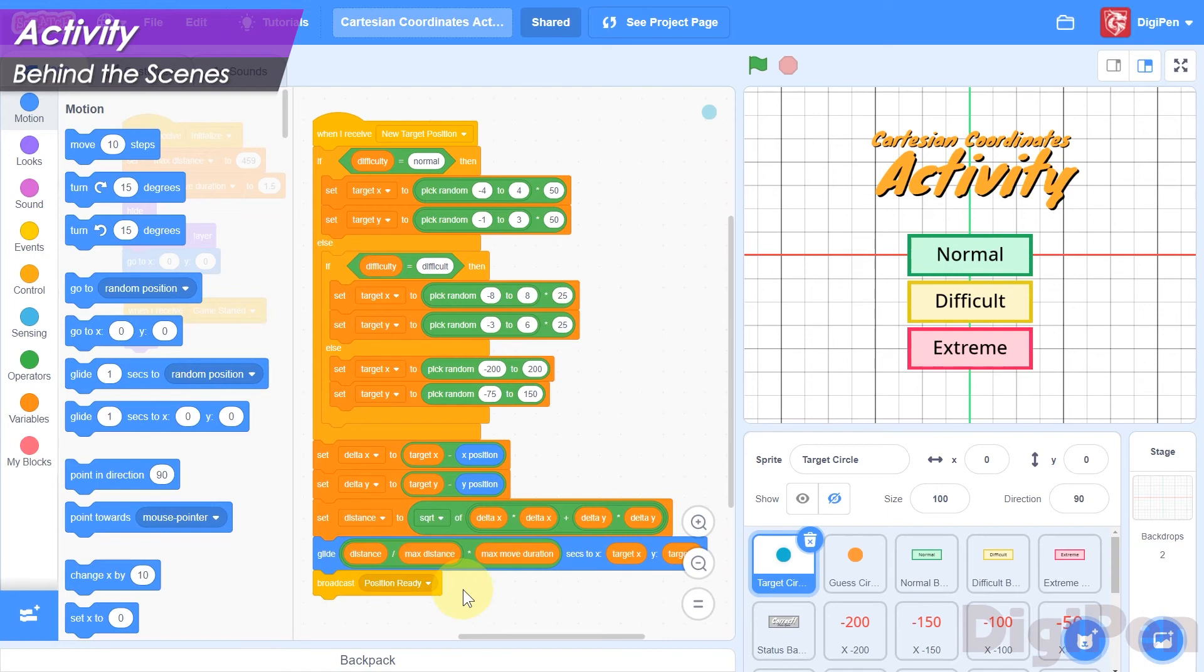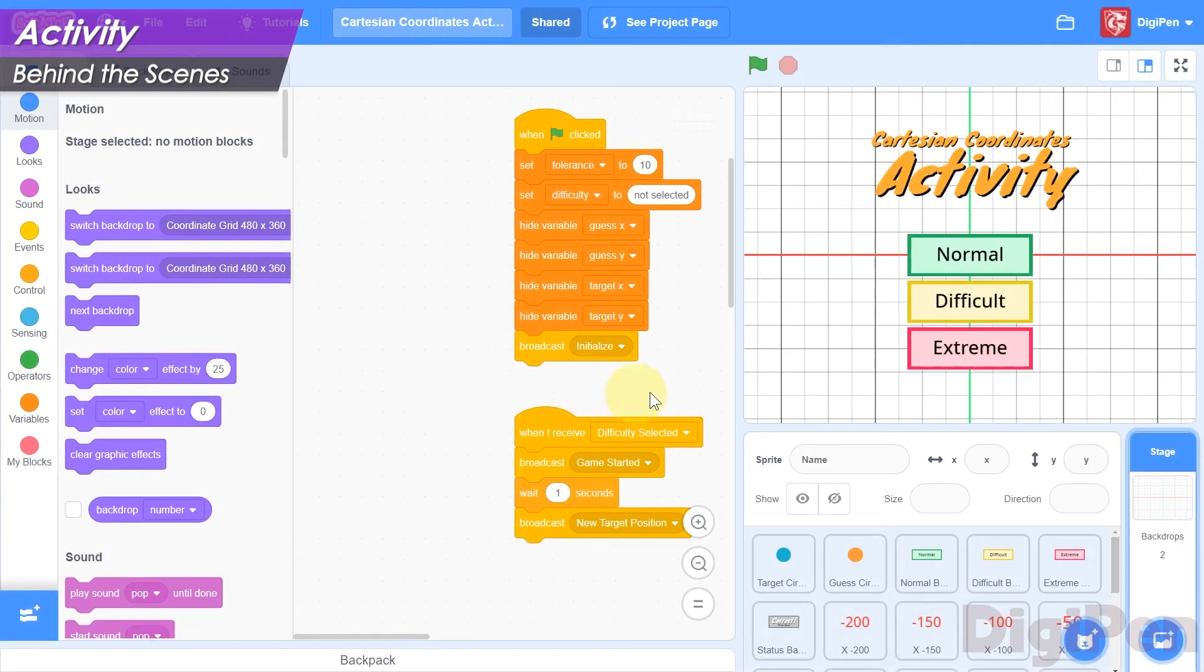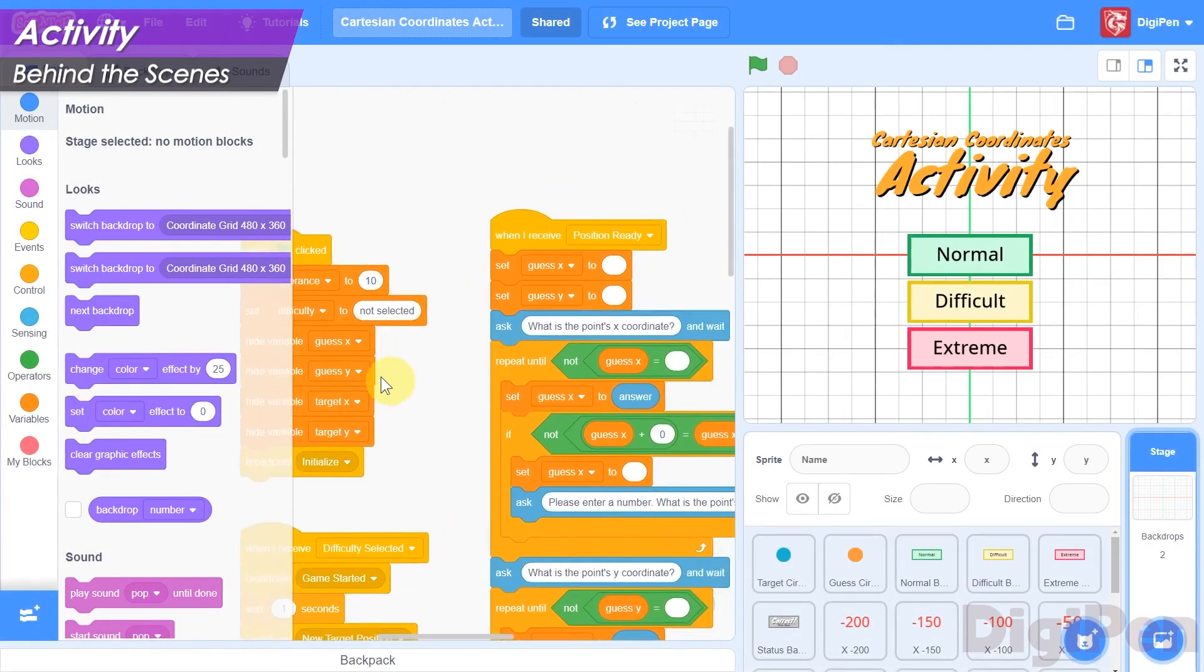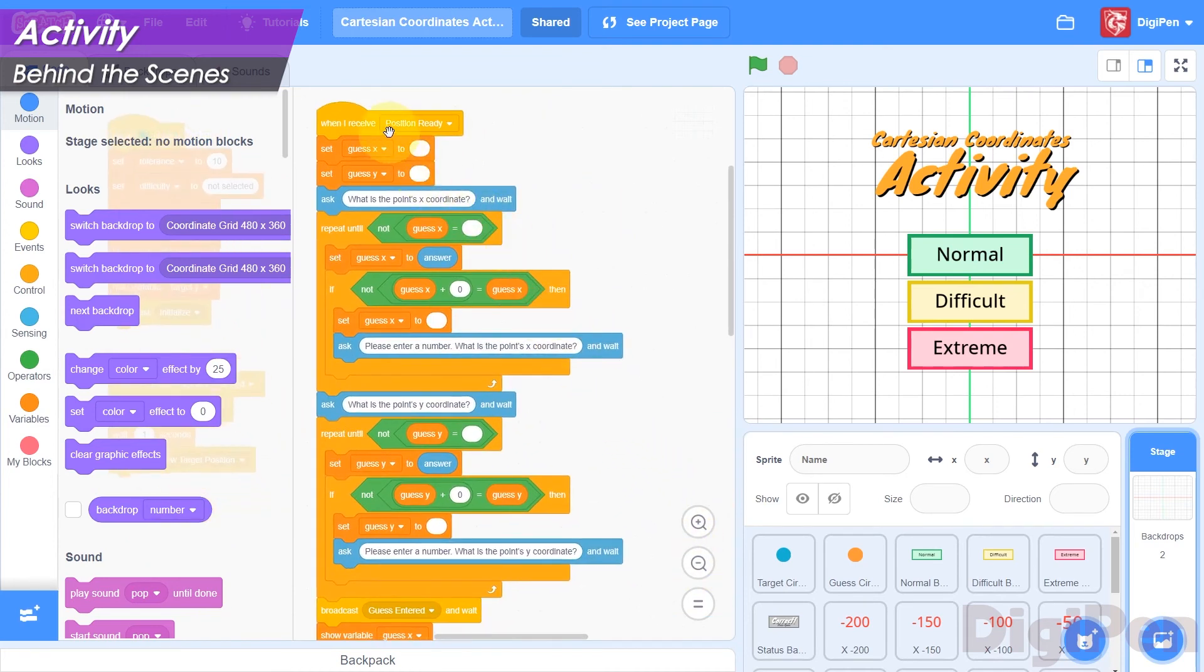Now select the Stage to the right of the sprite pane. In the Stage's code area, find the When I Receive block with the Position Ready event selected. Again, it's the tallest stack of code here.